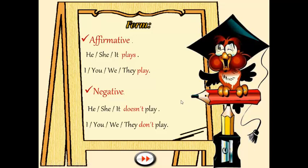En la forma afirmativa tenemos que tener presente dos cosas. La primera es que el verbo va a tener dos formas, dependiendo de la persona con la cual lo usamos. Por ejemplo, si hablo de I, you, we and they, el verbo, como pueden ver acá, no lleva S. En cambio, cuando hablo de he, she and it, el verbo va a agregar una S, y más adelante vamos a ver las reglas de agregar S a los verbos cuando se lo usa con he, she o it.